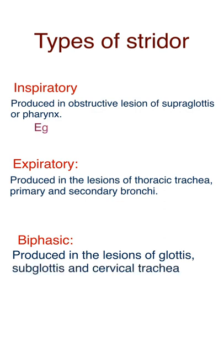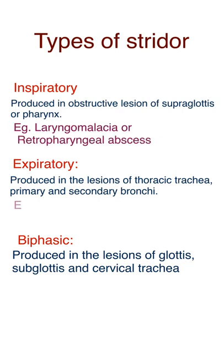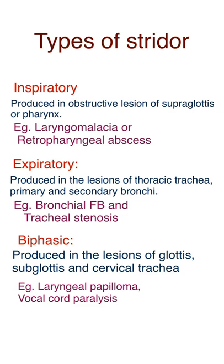Examples of inspiratory stridor include laryngomalacia and retropharyngeal abscess. Expiratory stridor examples include bronchial foreign body and tracheal stenosis. Biphasic stridor examples include laryngeal papilloma, vocal cord paralysis, and subglottic stenosis.